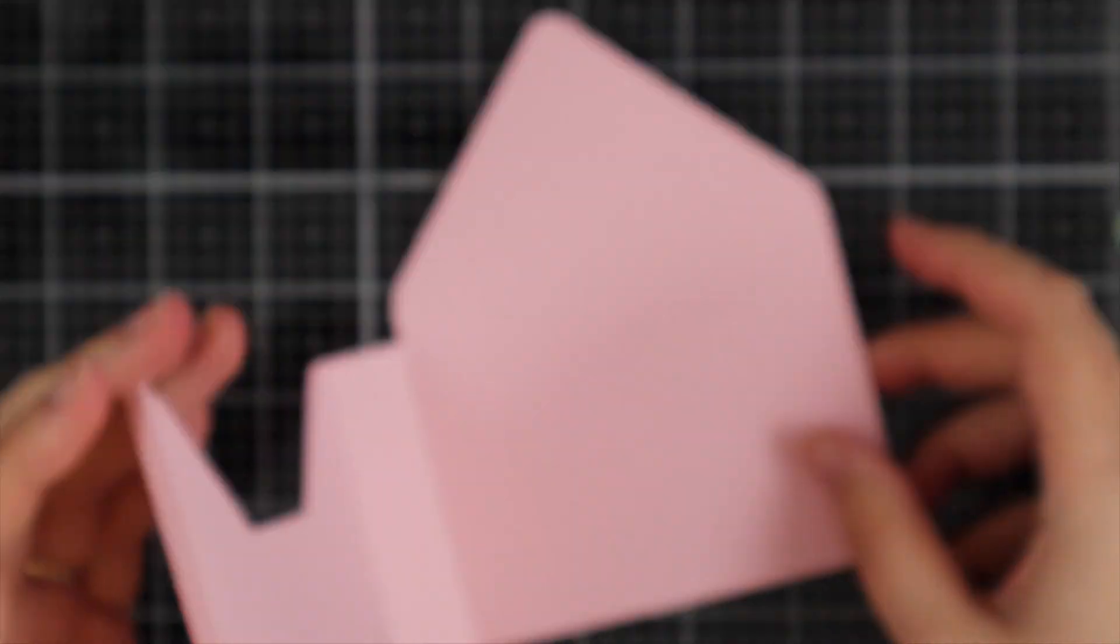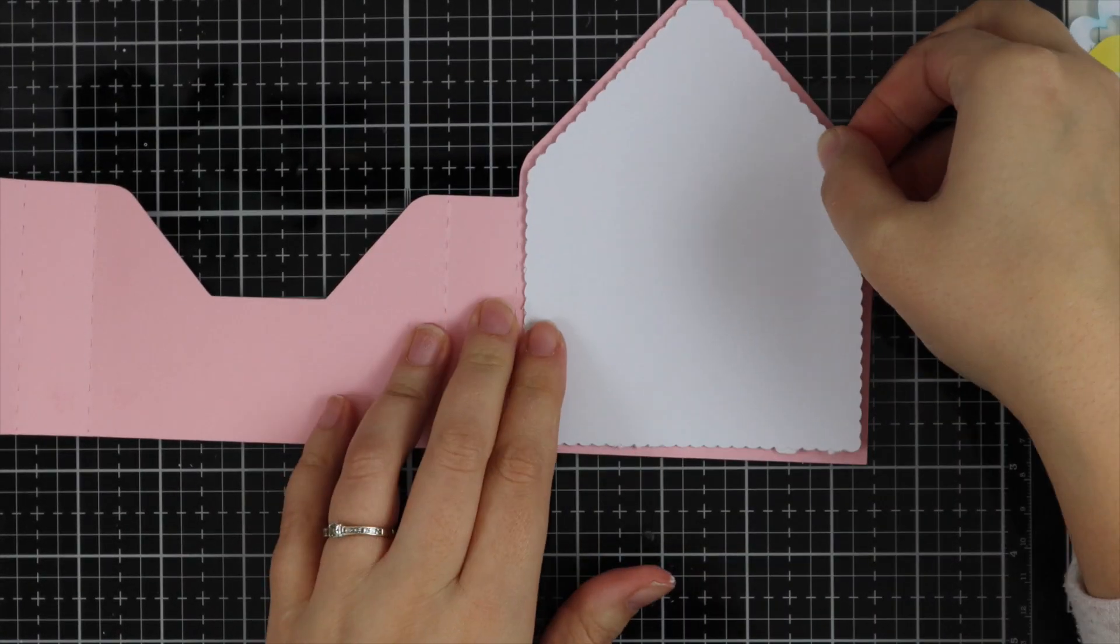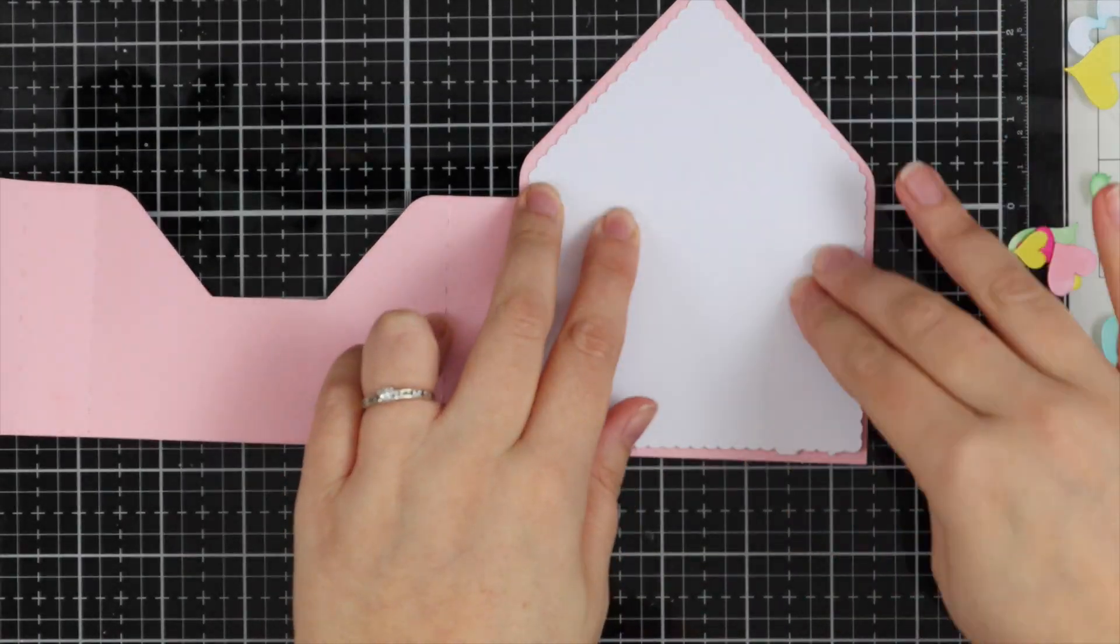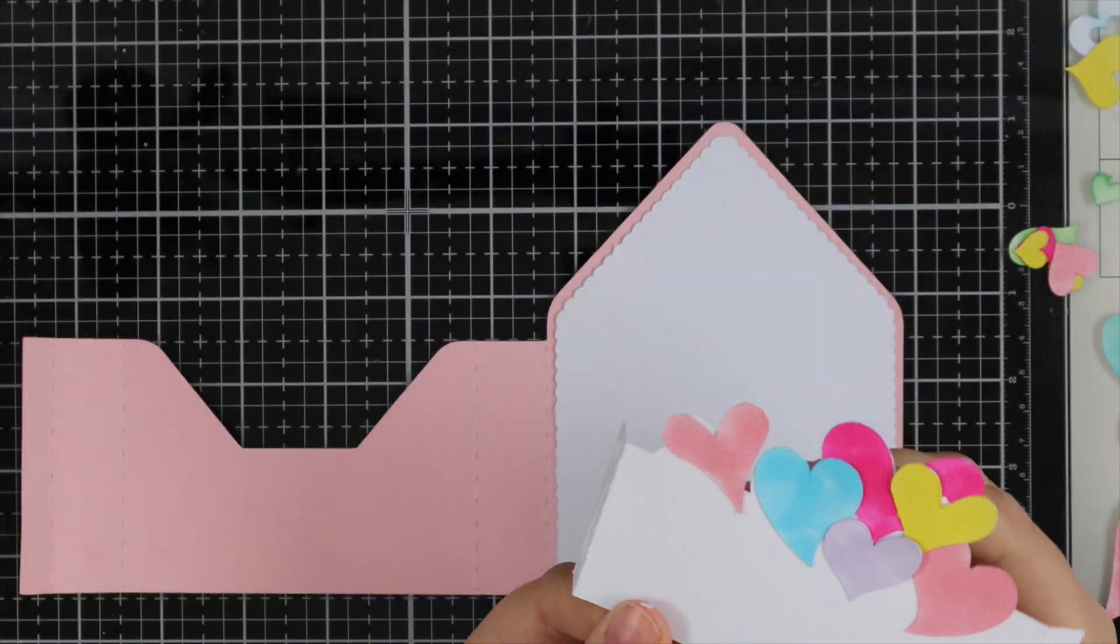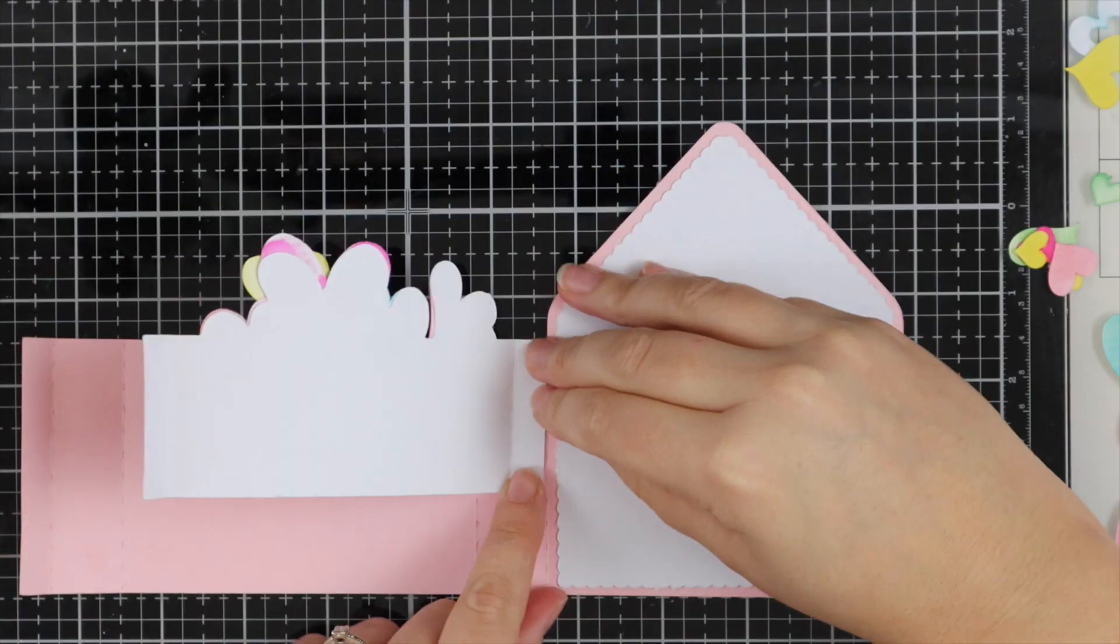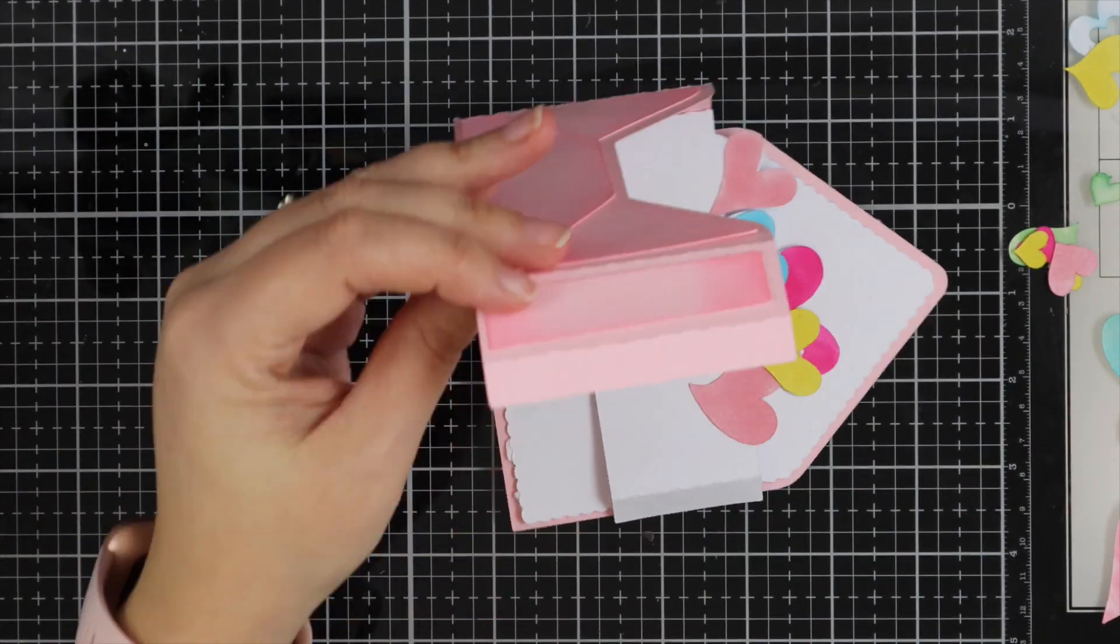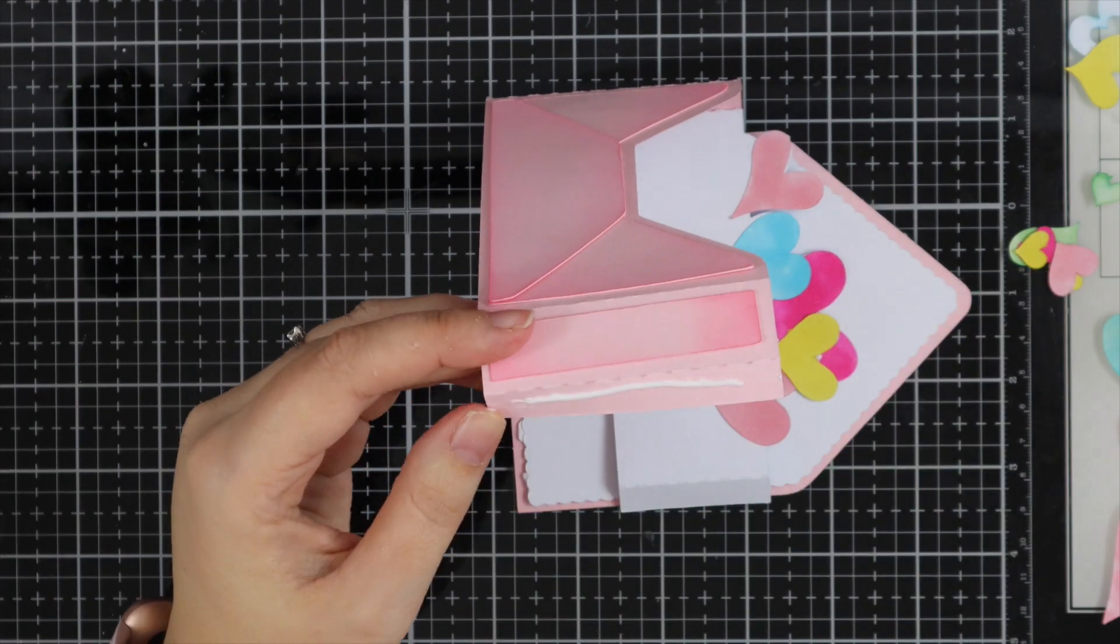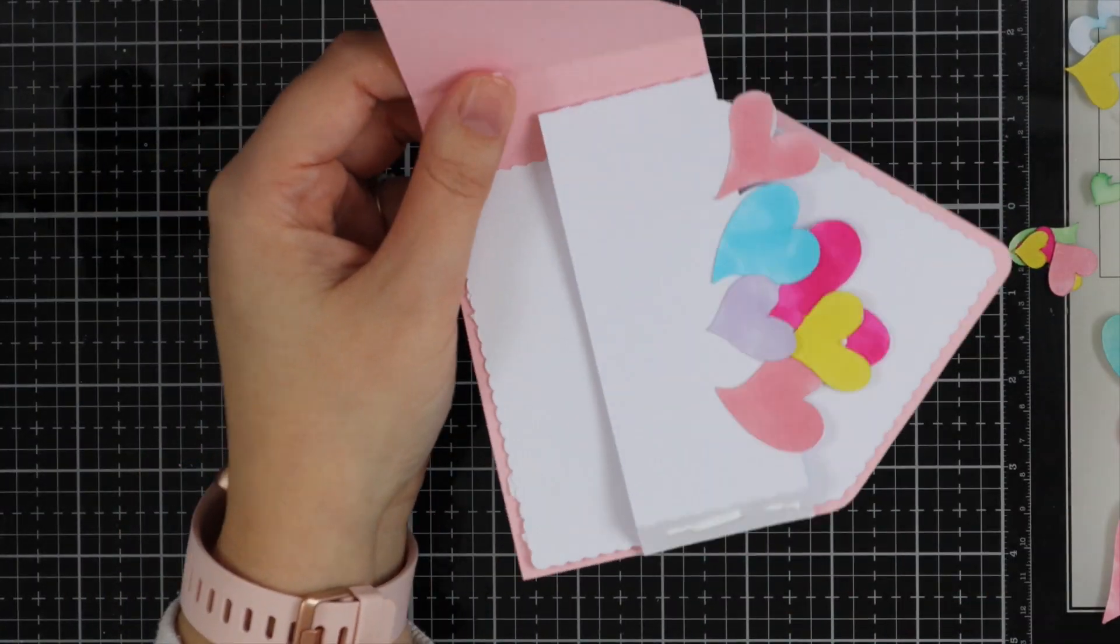And then once the front part's been adhered together nicely, I've got this scalloped insert. So again, I'm using my PVA glue and I'm just going to go ahead and stick that to the back of the card. And now I've just applied some PVA glue to the folds on the side, and I'm just pressing them down quite firmly just to make sure that they stick down nicely. And then I'm going to go ahead and put the box together.